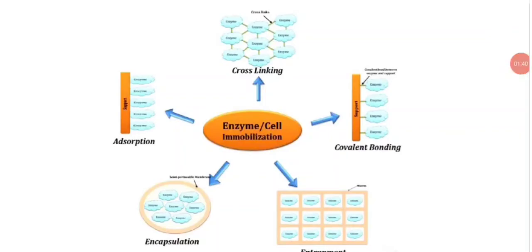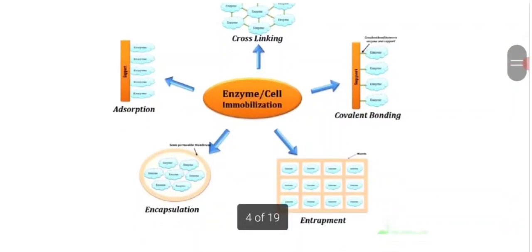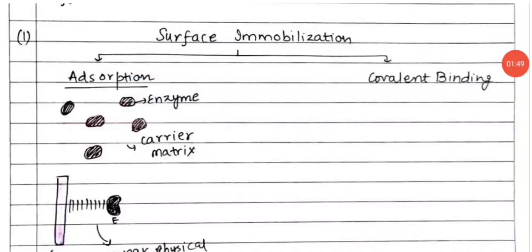Now the types of enzyme immobilization: covalent bonding, cross-linking, adsorption, encapsulation and entrapment. Surface immobilization is of two types. One is adsorption and another one is covalent binding.